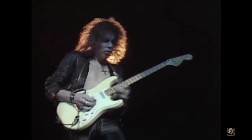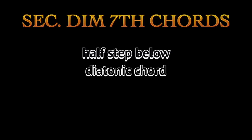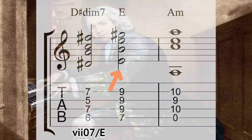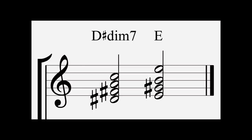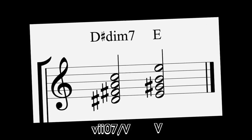Secondary diminished seventh chords basically gave Yngwie Malmsteen a career. These chords can be placed a half step below any chord in the key, providing a killer dissonance and consonance resolution sequence. For example, the secondary diminished seventh chord of E would be a D-sharp fully diminished seven. By placing this dissonant chord a half step below the target chord, we get a satisfying sour-to-sweet sensation on our sonic palate.